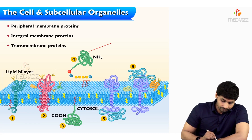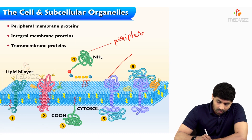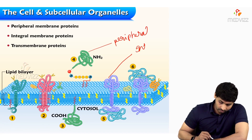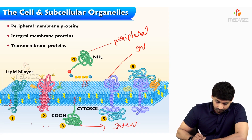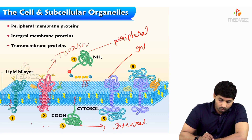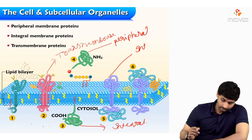Looking at the diagram: this is a peripheral membrane protein, this one is an integral membrane protein, this one is peripheral, this one is integral, and this one is transmembrane because it is winding throughout the cell membrane.